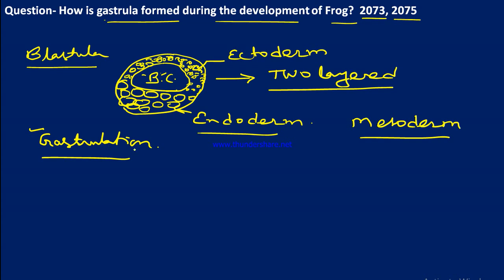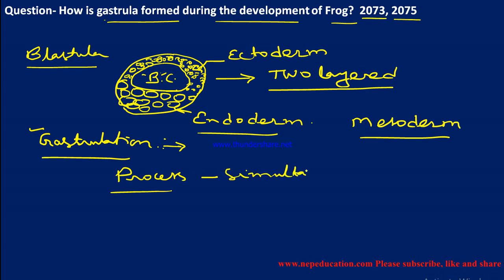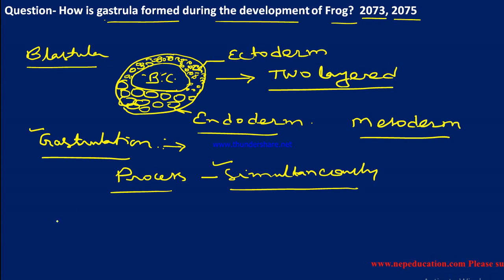In gastrulation, there are many processes occurring simultaneously. That is why different books present them in different orders — first this step, second that step. It doesn't matter; you can give any order because all processes occur simultaneously. We can write them in any convenient sequence.